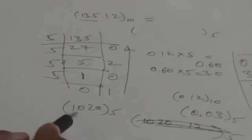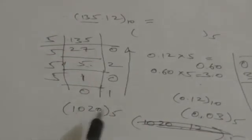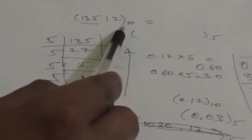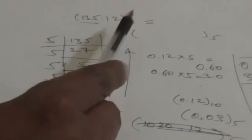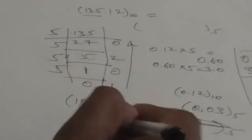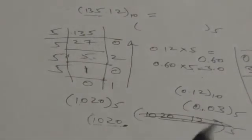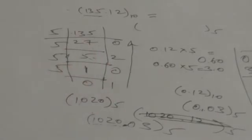Now we combine the two parts to get the desired result. The number 1020 is equivalent to the integer portion 135, and 0.03 is equivalent to the fractional portion 0.12. So the number equivalent to the decimal 135.12 in base 5 is 1020.03. That is the desired result. Thank you very much.